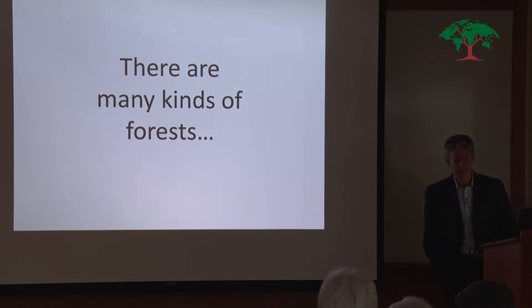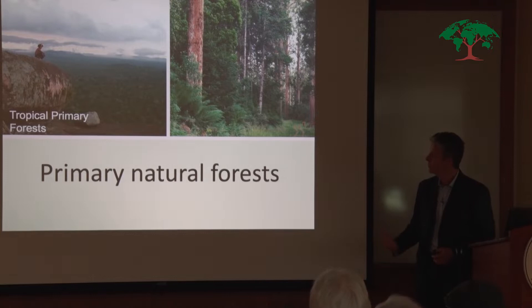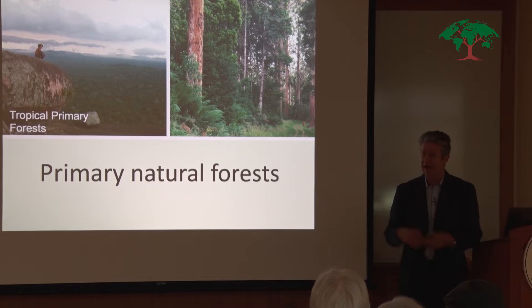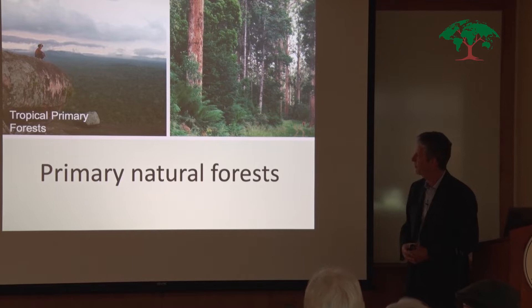This might seem obvious but it's not as obvious as you might think. There are many kinds of forests. We use the word 'forests' to cover a huge range of natural phenomena. Obviously what they have in common is trees, but there are forests and there are forests. When we say primary forests we're really talking about natural forests — forests that have come about as a result of natural processes to do with ecological processes and biological evolution, and the interaction between living organisms and the physical environment. That's a scene of a primary forest in the Brazilian Amazon.